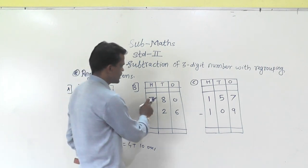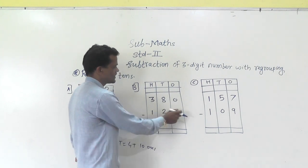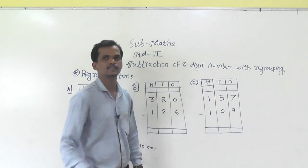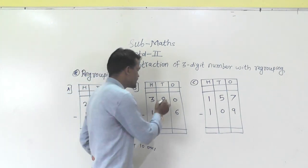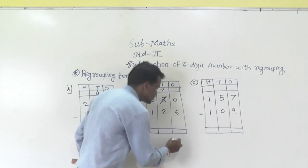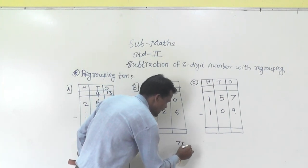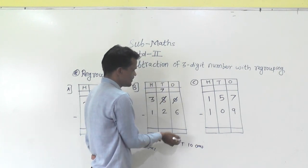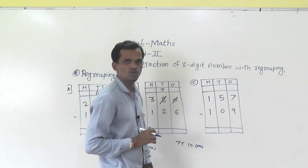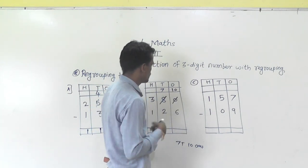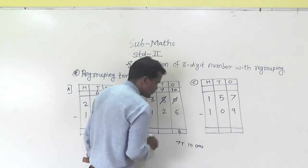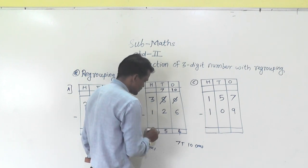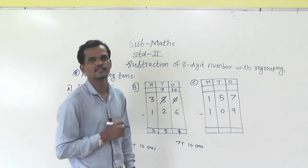Next example: 380 minus 126. Here, 0 minus 6 is not possible. So regroup this 8 tens into 7 tens and 10 ones. Write 7 right here, and 10 ones add into the 0 ones, giving 10 ones. Now 10 minus 6 is 4, 7 minus 2 is 5, and 3 minus 1 is 2. So 254 is the answer.